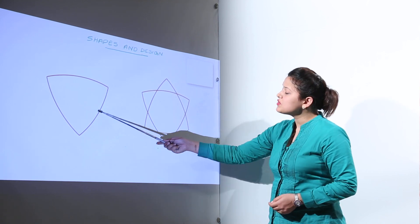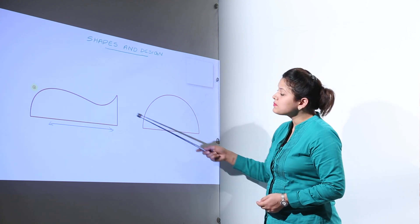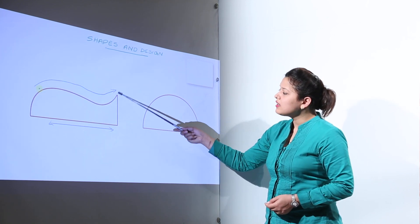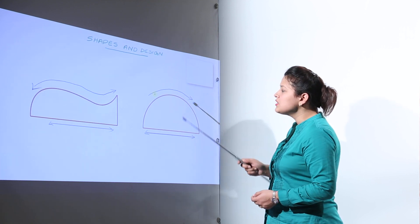There are some shapes which are made up of only curved edges. But there are some shapes that have straight edge and curved edge both. Here also straight edge and curved edge both.